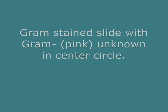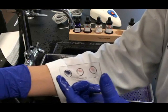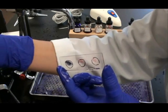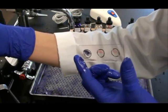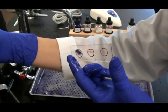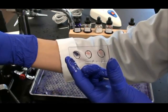The slide I just prepared has a Gram negative unknown. I see my positive control on the left. My negative control on the right. And my unknown in the center is pink like my negative control.